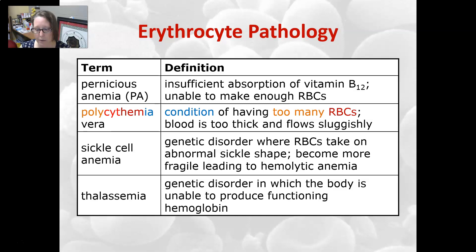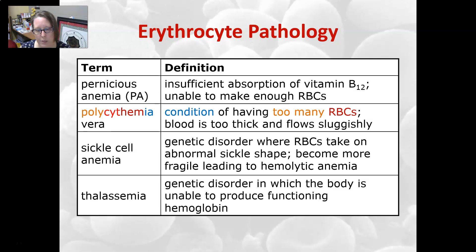Sickle cell crisis can also cause a lack of oxygenation to tissue. Thalassemia is a genetic disorder in which the body is unable to produce functioning hemoglobin, or cannot produce enough of it, resulting in a decrease in hemoglobin production. In severe cases the baby may not survive, but in milder forms they simply produce a decreased amount.